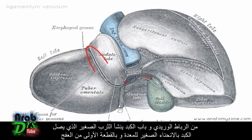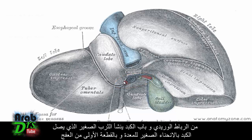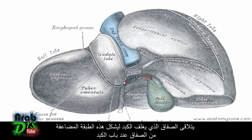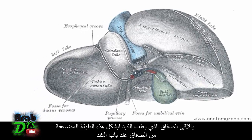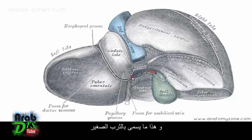From the ligamentum venosum and the porta hepatis, you get the lesser omentum, which connects the liver to the lesser curvature of the stomach and to the first part of the duodenum. The peritoneum which encloses the liver meets to form this double layer of peritoneum at the porta hepatis, connecting it to the lesser curvature of the stomach and the first part of the duodenum. This is called the lesser omentum.